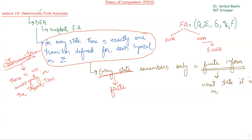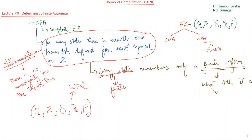If we define the DFA formally, DFA is a five-tuple entity: Q, sigma, transition function delta, initial state q0, and F — the set of final states. Note that this set F can be empty, meaning there is no final state in the DFA.